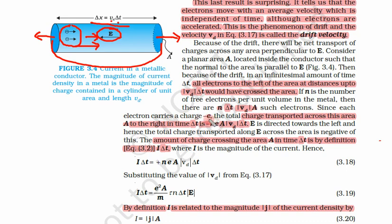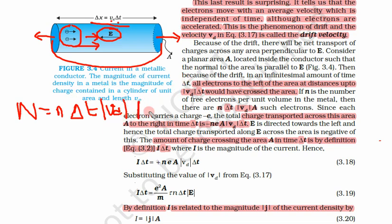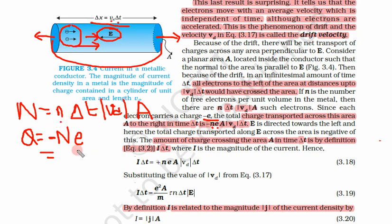Since each electron carries charge minus e, the total charge transported Q equals the total number of electrons times the charge per electron: Q = -n·e·A·Vd·delta t. This is the total charge crossing the area in time delta t. Since the electric field E is directed towards the left, the total charge transported along E across the area is the negative of this expression.